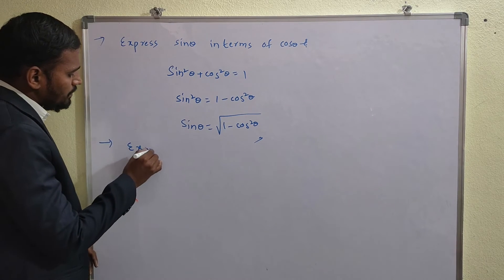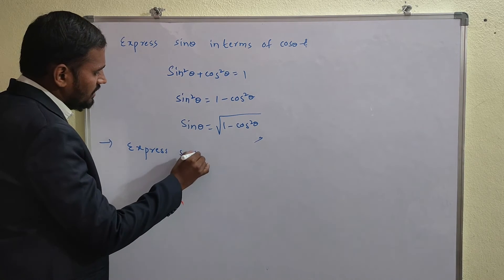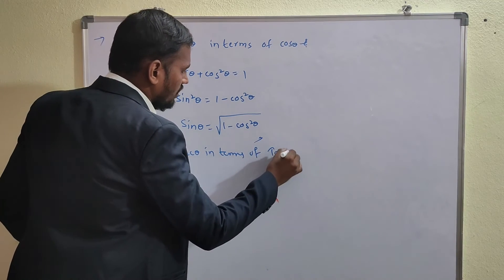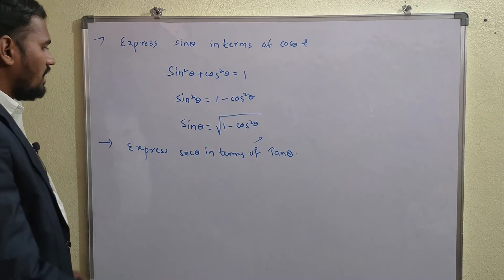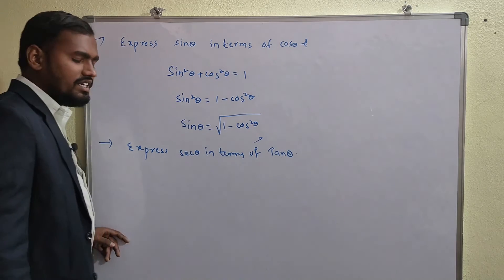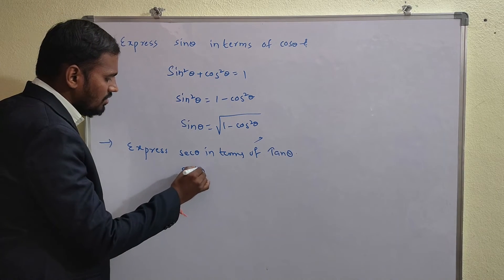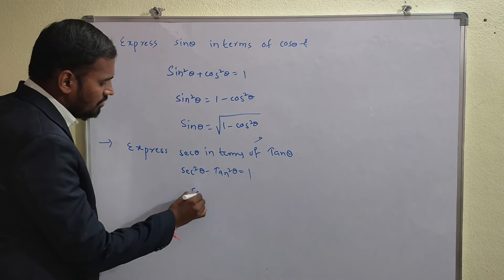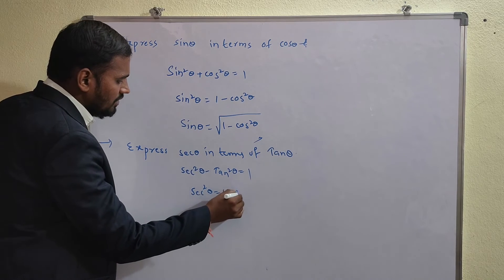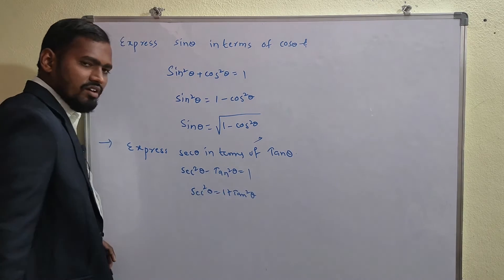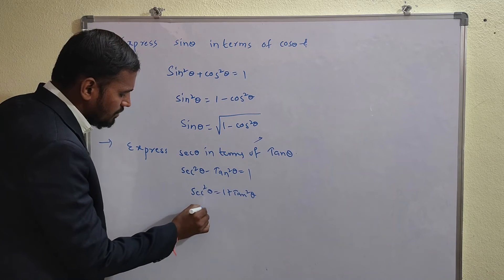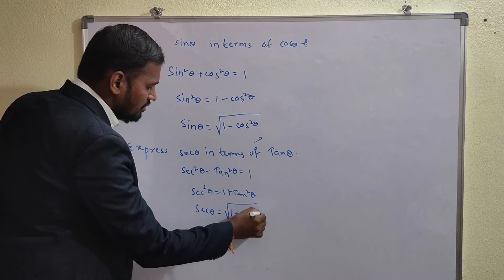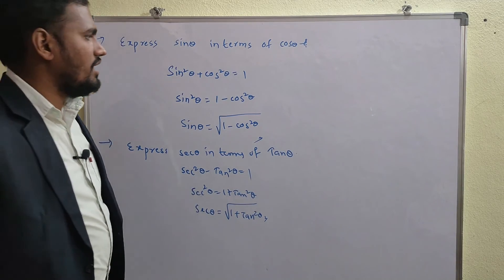Problem 2: Express sec θ in terms of tan θ. The relevant identity is sec²θ - tan²θ = 1, so sec²θ = 1 + tan²θ. Taking the square root: sec θ = √(1 + tan²θ). This is the answer.